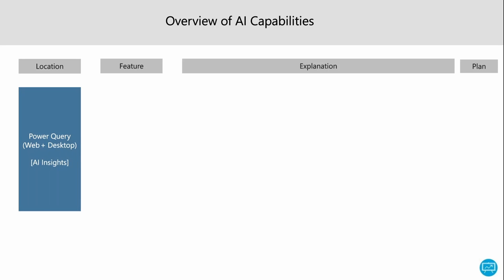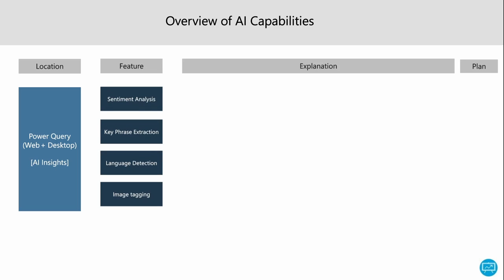The first location where you can find AI insights or AI capabilities is in Power Query — either the web or the desktop. In the web, it's often through data flows. The features available are sentiment analysis, key phrase extraction, language detection, and image tagging.